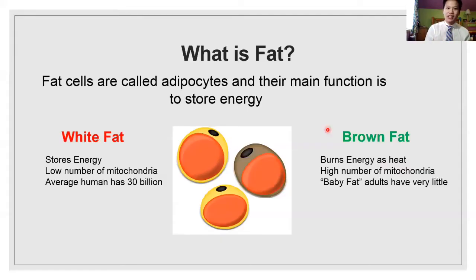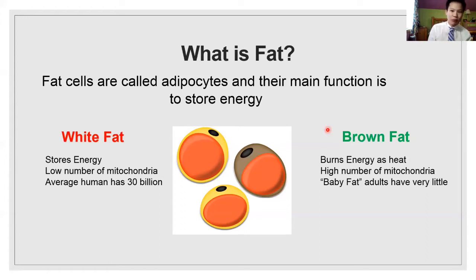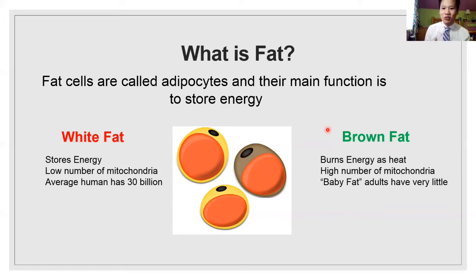So what exactly is fat? Fat is made up of cells called adipocytes and their main function is to store energy. So you can imagine when you're Netflix and chilling on your bed and you're consuming excess calories, your body takes in those excess calories and stores it in the form of fat, and then your body can later use that energy for future use.